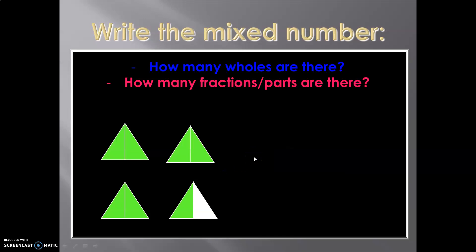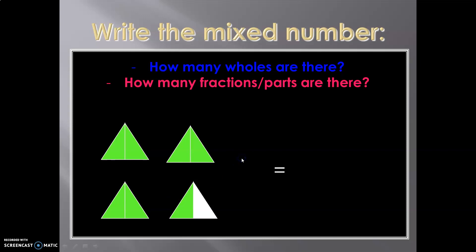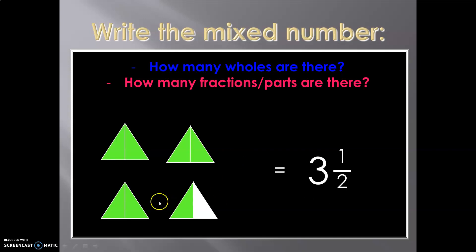Write the mixed number. How many wholes are there? One, two, and three. How many parts are there in each triangle? There are two parts. In the third triangle, only one part is shaded out of two. So you write this as three as a whole, and one is shaded out of two — that is three and a half, or three and one upon two.